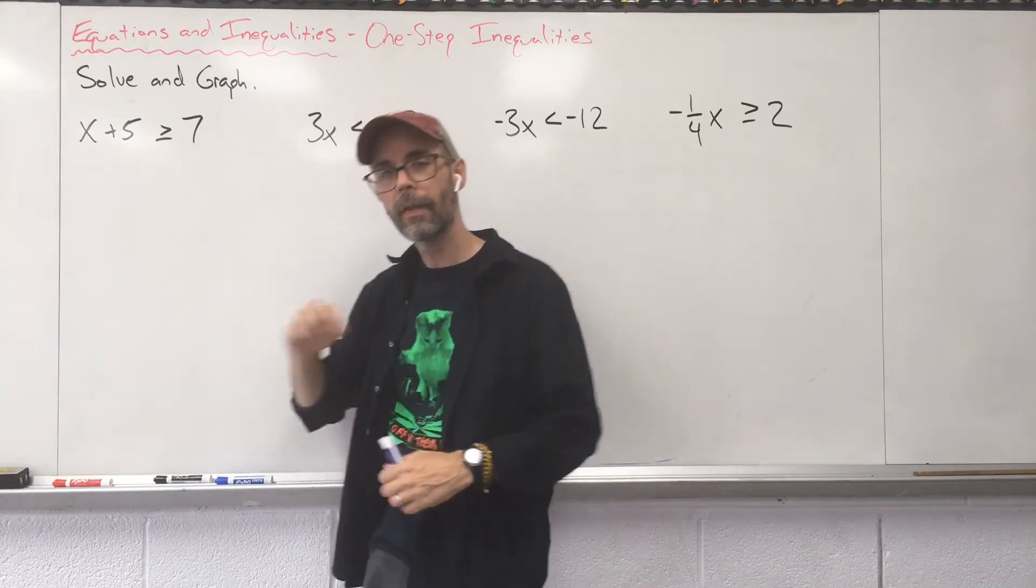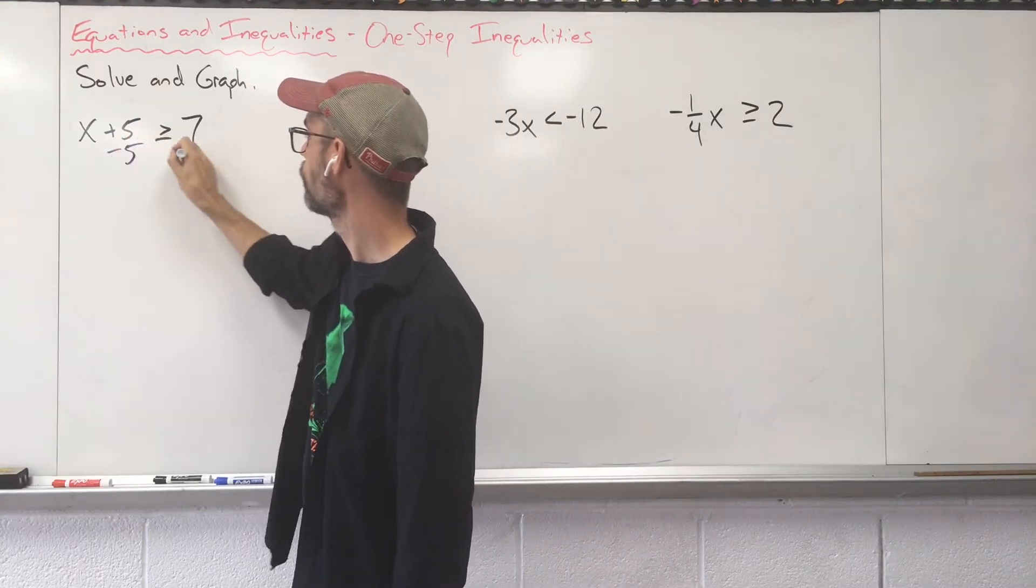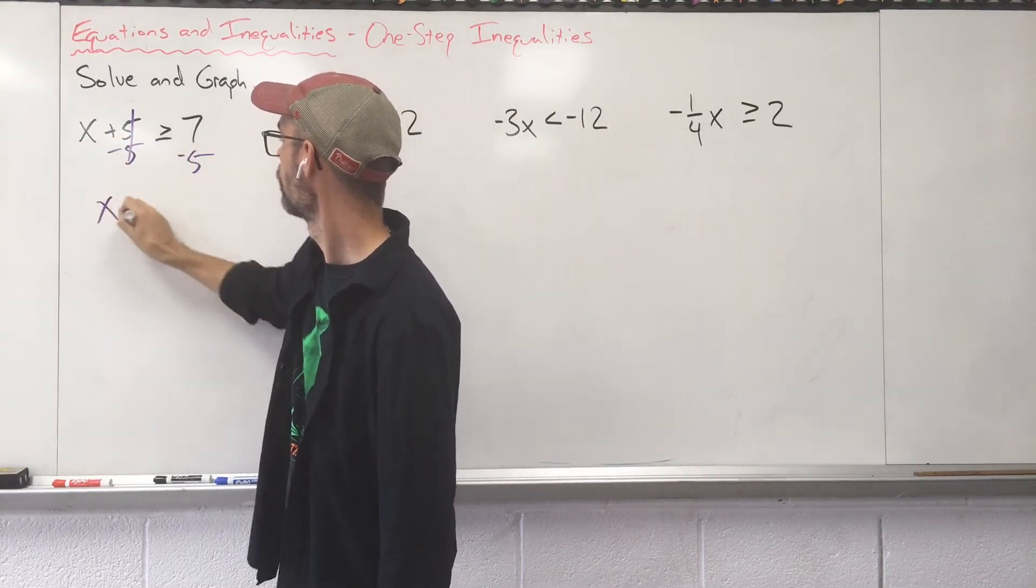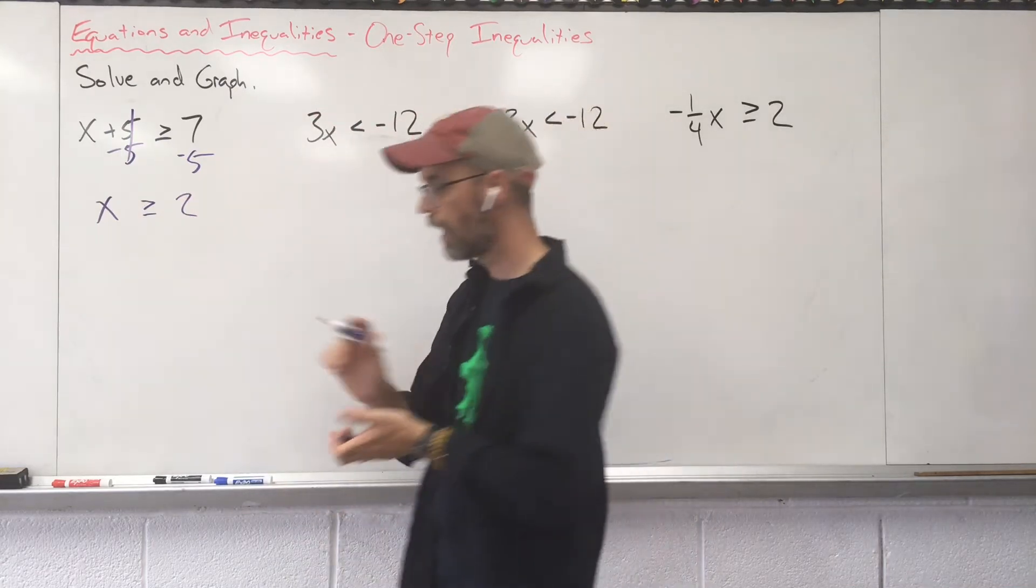In order to move that 5, the inverse would be subtract 5. So let's subtract 5 from both sides. X greater than or equal to 2, good, now let's graph.